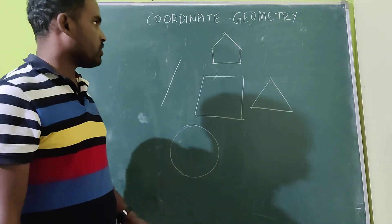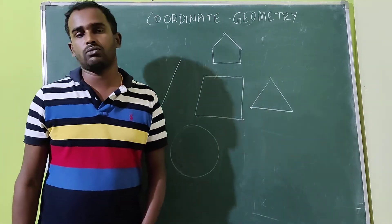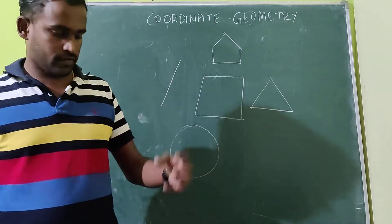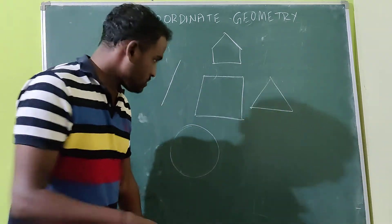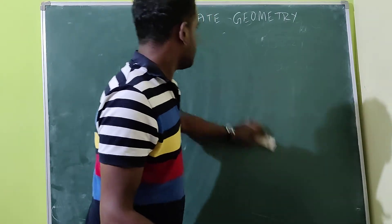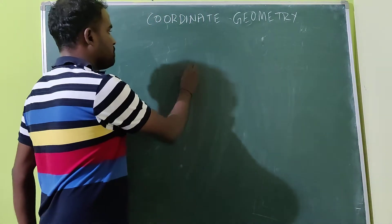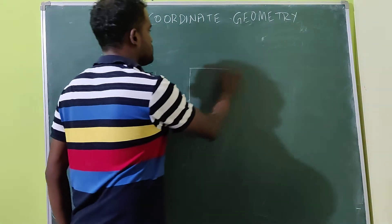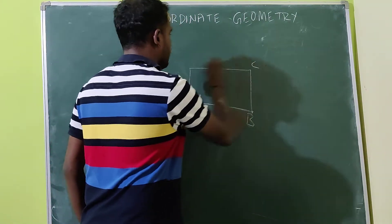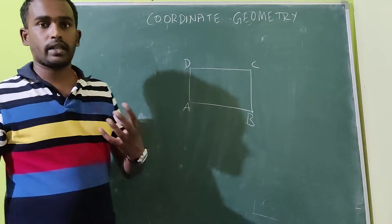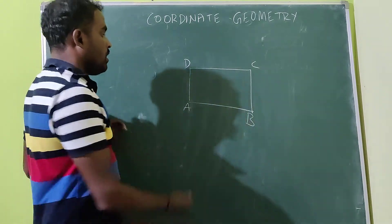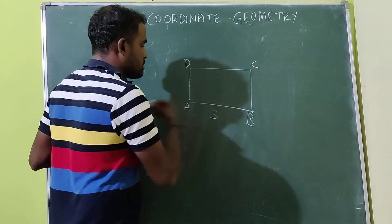Here we have one concept called coordinate geometry. Geometry means we can solve geometrical figures. Similarly, one of the simplest and most basic geometrical figures is the rectangle.